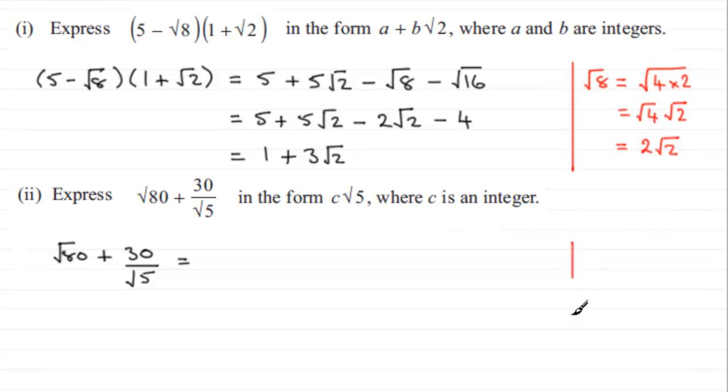So √80 has to be broken down. Let's do this on the side: √80. We've got this clue that there's a 5 in there, and I know 16 times 5 gives 80. So this is exactly the same as √16 times √5. √16 is 4, so we've got 4√5. Let's take that first term, √80, and write it then as 4√5.